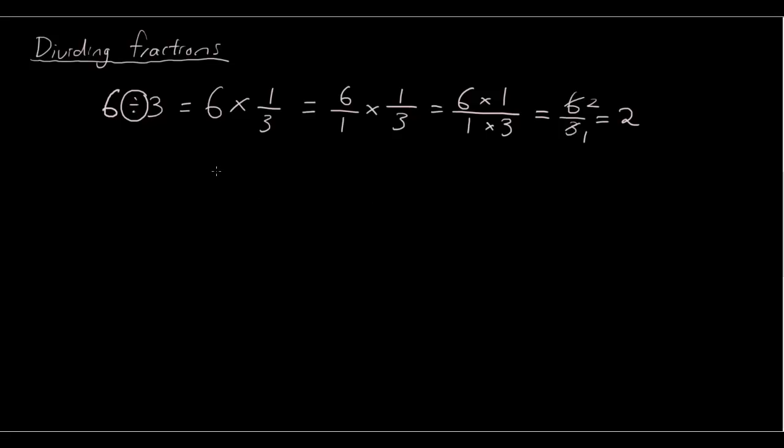Now I know this is a very long way to do 6 divided by 3, but it shows you that when you're dividing by a number, all you have to do is turn the number upside down. So we turn the 3 upside down to give us 1/3, and we change the divide sign into times.